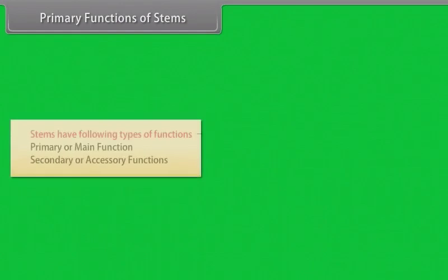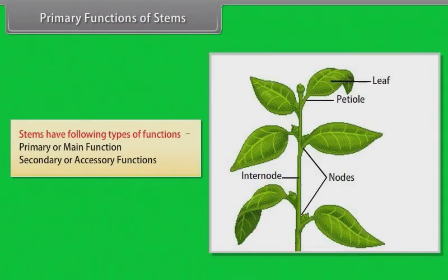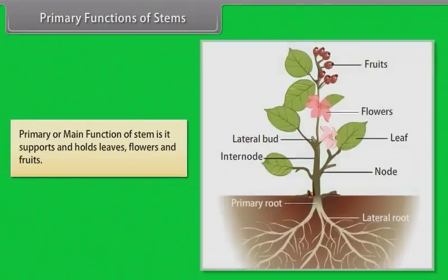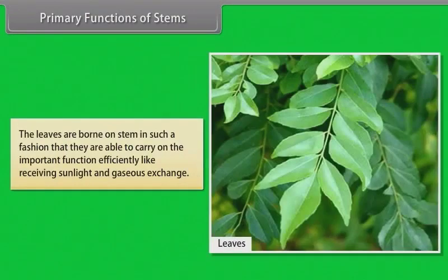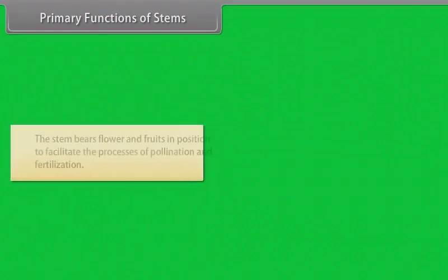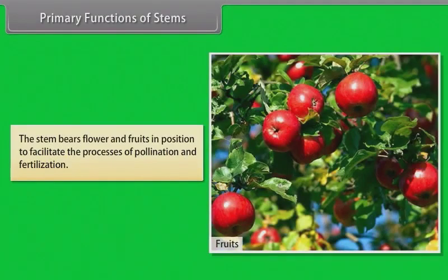Stems have primary (main) and secondary (accessory) functions. The primary functions are: it supports and holds leaves, flowers and fruits; the stem conducts water and minerals from the roots to leaves, flowers and fruits; the leaves are borne on stem in such a fashion that they are able to carry on important functions efficiently, like receiving sunlight and gaseous exchange; and the stem bears flowers and fruits in position to facilitate the processes of pollination and fertilization.